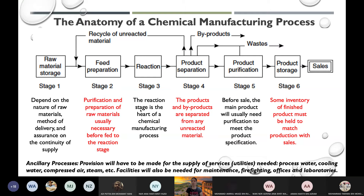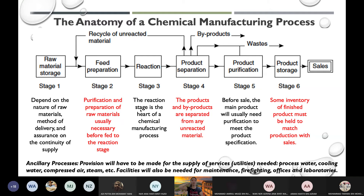The last stage is product storage. The same considerations apply as for raw material storage — you must balance the ability to get raw material and the ease of selling your product to the customer. You need to know who your potential suppliers and customers are. This will also inform your plant location decision.